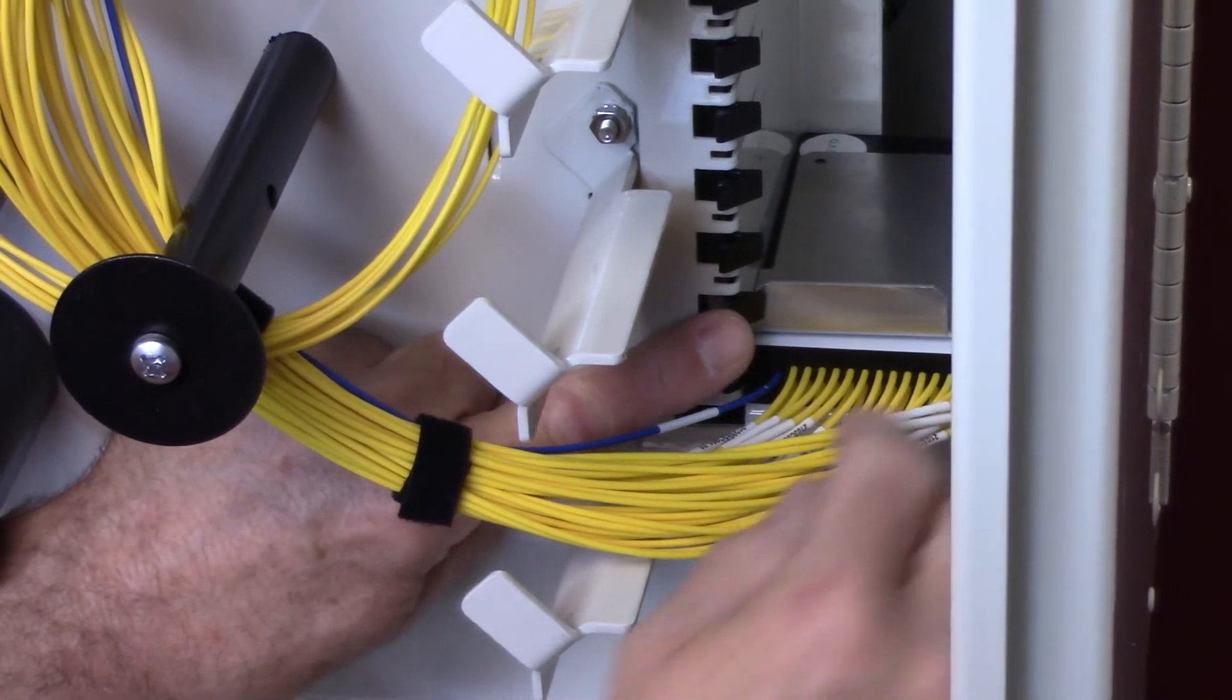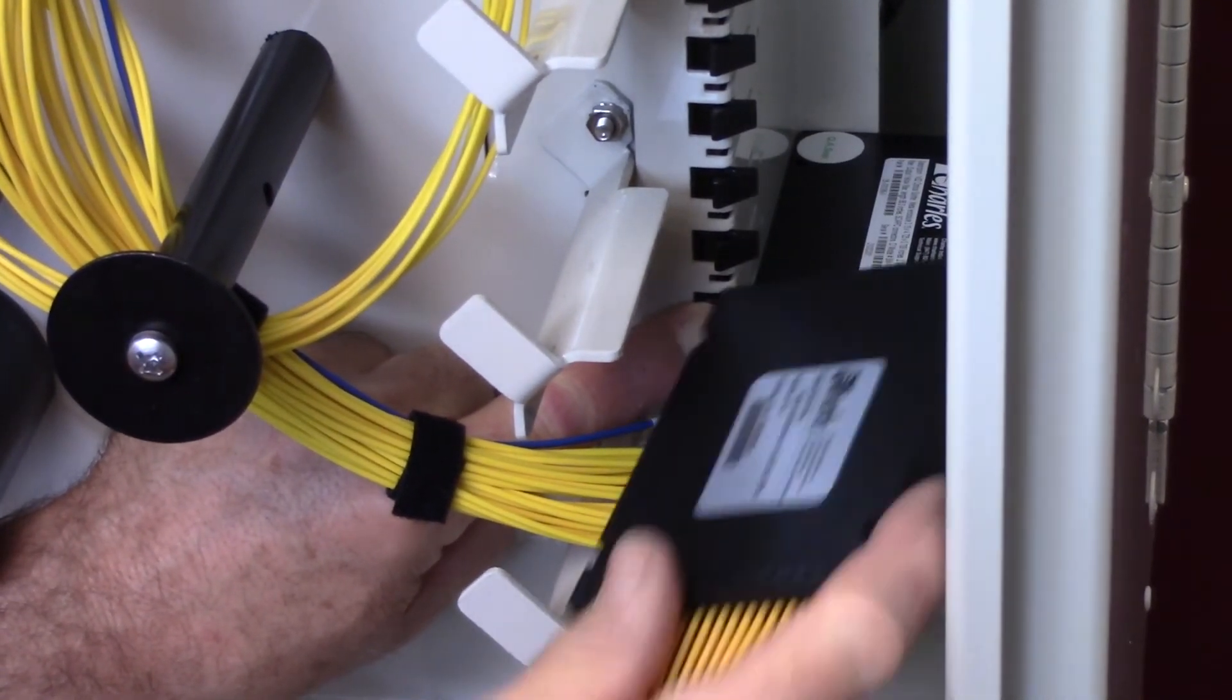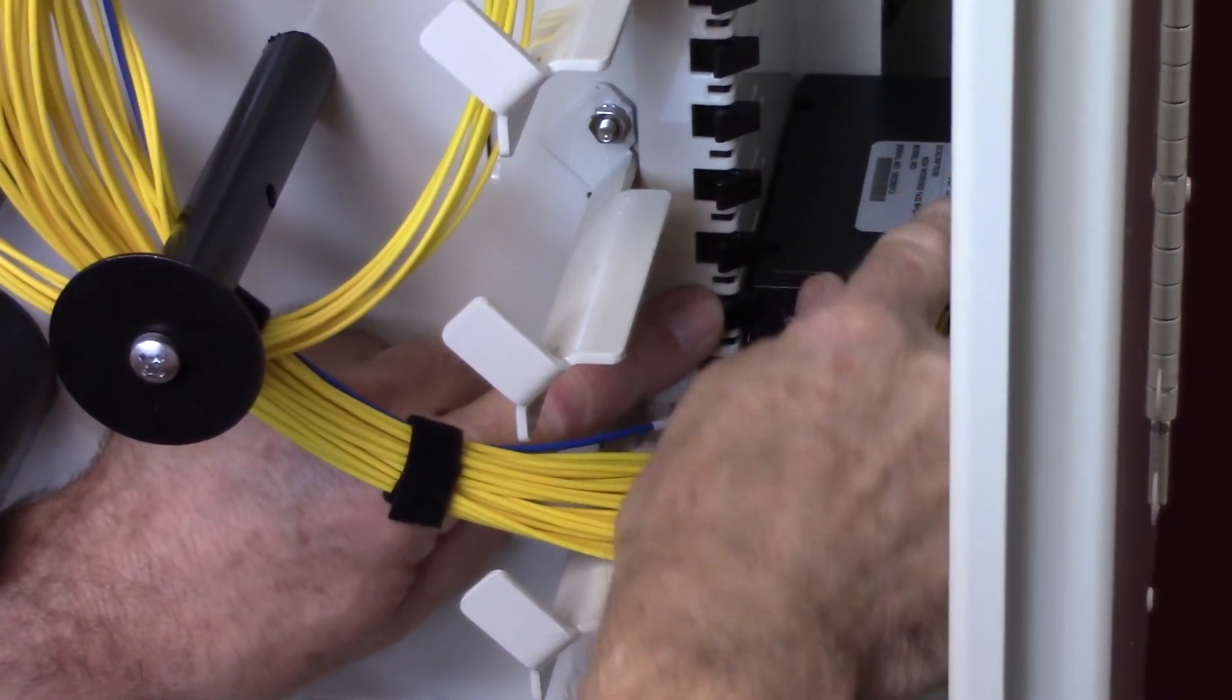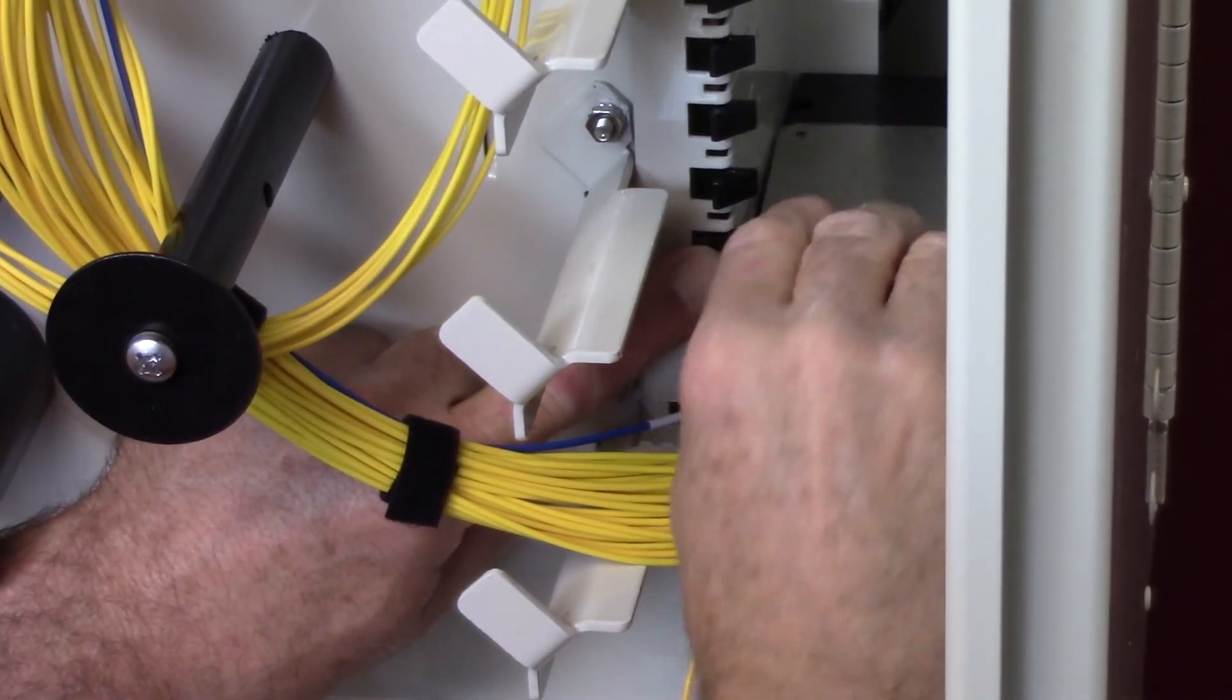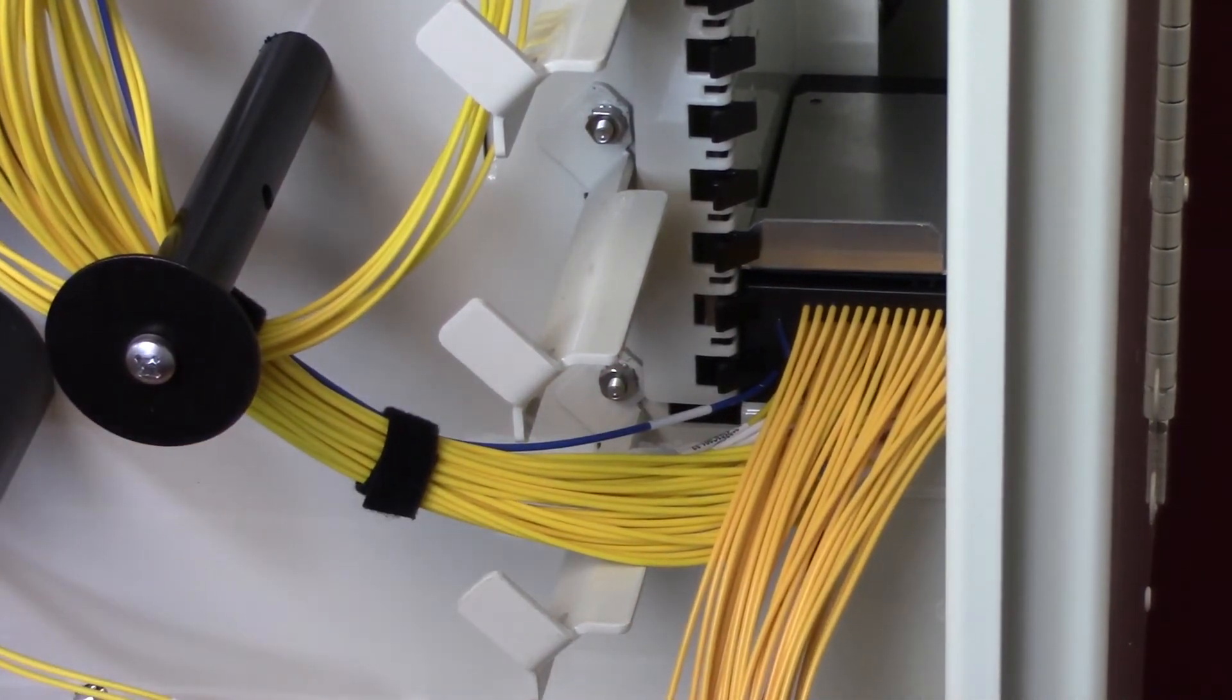To add a second splitter module, simply remove the splitter retaining bracket by depressing the release clip. Slide in the second module until the positive latch has secured the splitter module. Reinsert the splitter retaining bracket into the chassis.